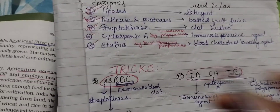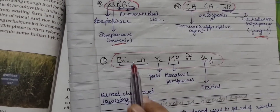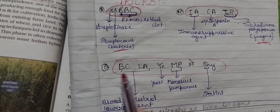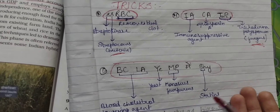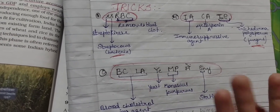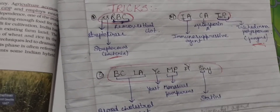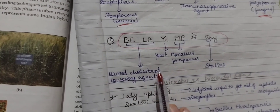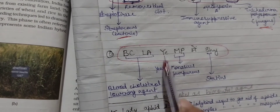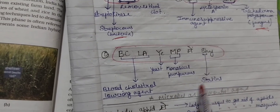Now the last one: statins, which are used as a blood cholesterol lowering agent. The trick is 'BC LA yeh MP mein shy' — meaning one person coming to MP is very shy. BC stands for Blood Cholesterol Lowering Agent, 'yeh' is for yeast, MP is for Monascus purpureus, and 'shy' is for statins.